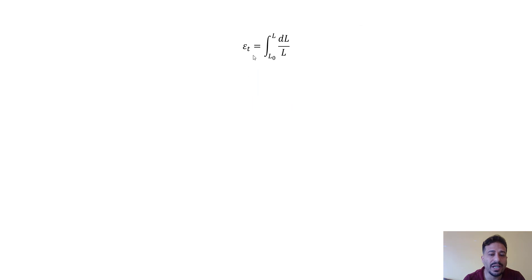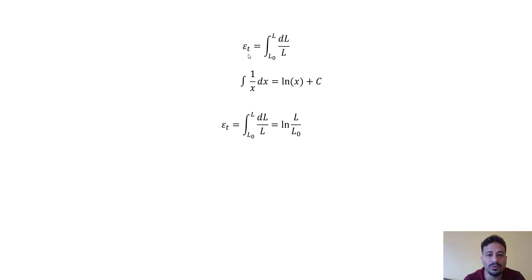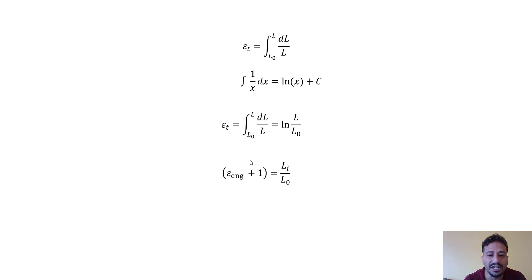The total strain equals the integration from L0 to L of dL divided by L. Remembering from calculus that the integral of 1/x dx equals ln(x) plus a constant, the total strain equals ln(L/L0). Since L divided by L0 equals engineering strain plus 1, we replace this value and get that the true strain equals ln(engineering strain plus 1).